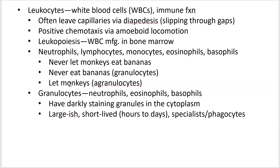There are two types of leukocyte: granulocytes, which have granules, and agranulocytes, without granules. To remember granulocytes, think 'Never Eat Bananas' (neutrophils, eosinophils, basophils). Agranulocytes are 'Let Monkeys' (lymphocytes, monocytes). Granulocytes have darkly staining cytoplasmic granules, are fairly large, don't live long, and tend to be specialists and phagocytes.